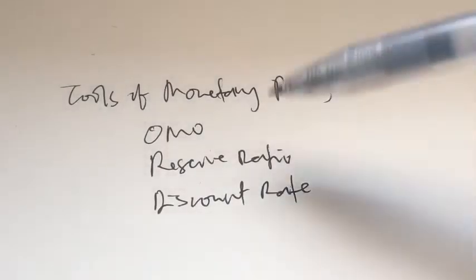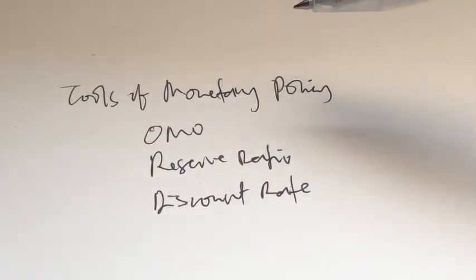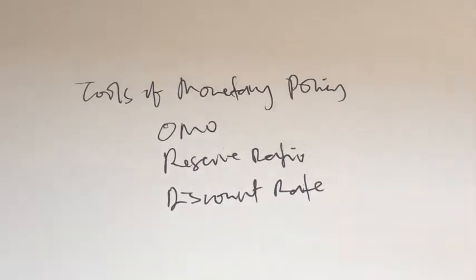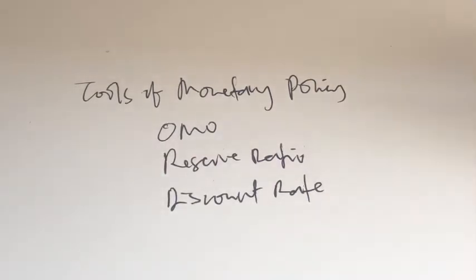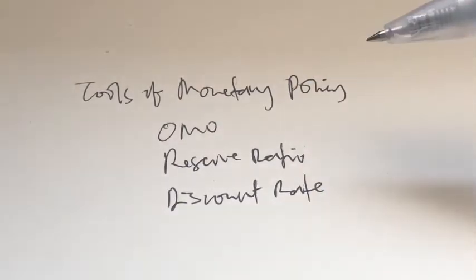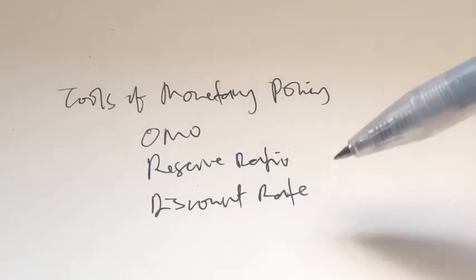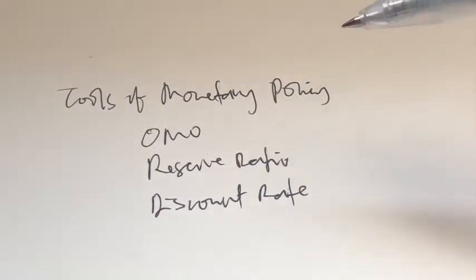A quick recap on how each of these tools work. Under Open Market Operations, it involves the buying and selling of government bonds and securities in order to increase or reduce the money supply. The central bank can also manipulate the Reserve Ratio in order to influence the ability of the commercial banks to lend. If the central bank wants to increase money supply, it will reduce the Reserve Ratio; whereas if it wants to reduce money supply, it will increase the Reserve Ratio.